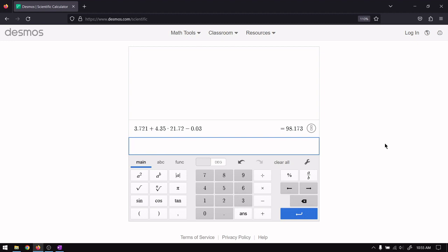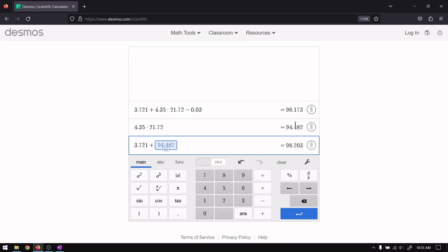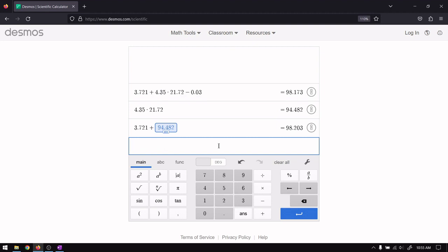Now instead, let's take this step by step and do order of operations. The first thing that we've done here is multiplication. So I would do 4.35 times 21.72. Okay. And then I'm going to take that. I'm going to add 3.721 to that number. I just got 3.721. I'm just going to use the answer functionality, which takes the previous answer, plugs it in.